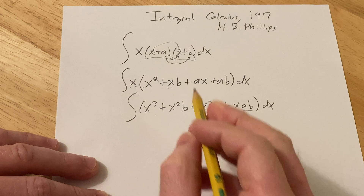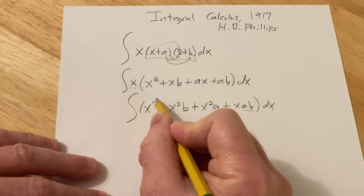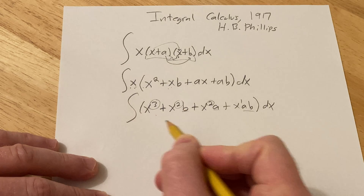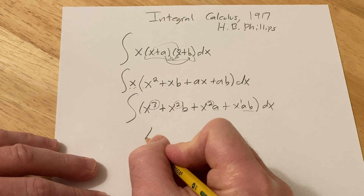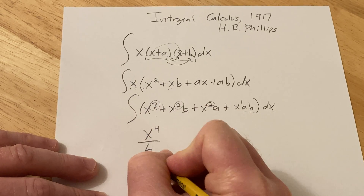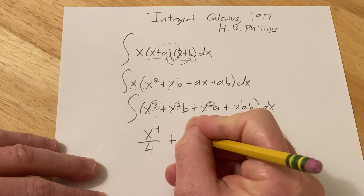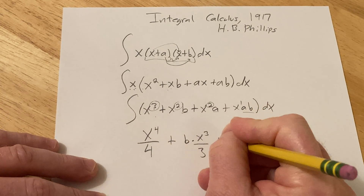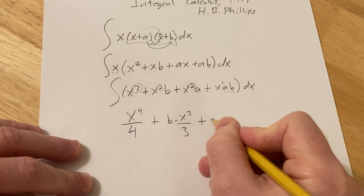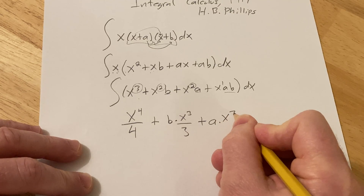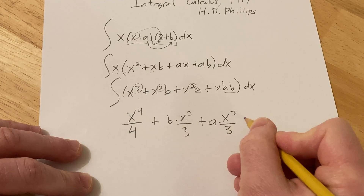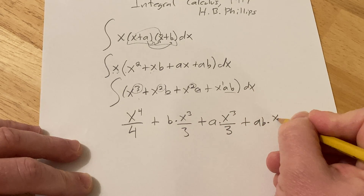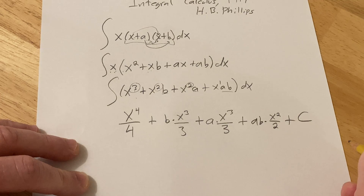Now let's integrate. When you integrate, you basically use the power rule — you add 1 to each of the exponents and then divide by the result. So this will be x to the 4th over 4, plus b times x cubed over 3, plus a times x cubed over 3, plus ab times x squared over 2, plus our constant c.